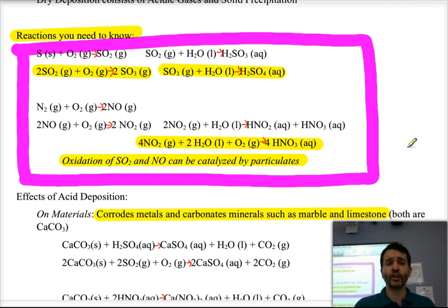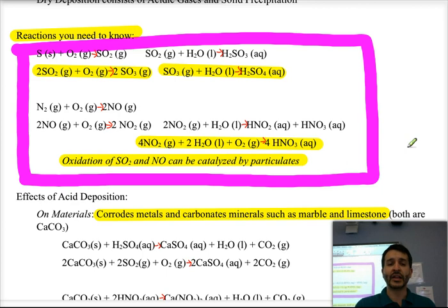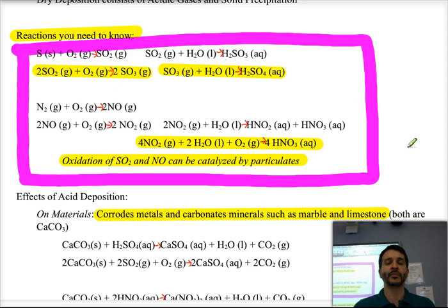The oxidation of sulfur dioxide and nitrogen monoxide into their higher oxides — to the dioxide and trioxides — is in many cases catalyzed by solid particulates floating in the air. This is one of the reasons why we are concerned about particulates in the air, because they can increase the effect of acid precipitation.